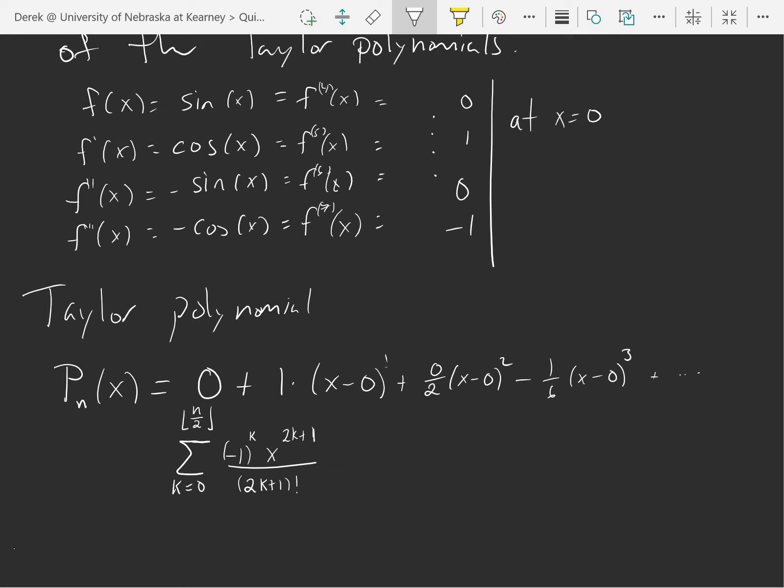Let's check. So if I want the degree 3 guy, that's just going to be, well we have the degree 3 written out here. That's going to be x minus x cubed over 6.